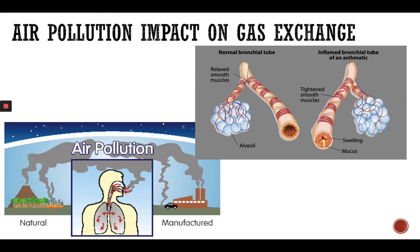Air pollution impact on gas exchange — air pollution causes a lot of respiratory disease. One of them is asthma, which is an obstructive lung disease where it is hard for air to get out of the lungs. Air pollution causes inflammation of certain membranes, swelling, and a buildup of mucus that doesn't let air escape. In a person with asthma, the lungs expand normally and air usually has no problem traveling into the lungs, but the problem starts because the air cannot get out. This causes asthma attacks, which are really serious.